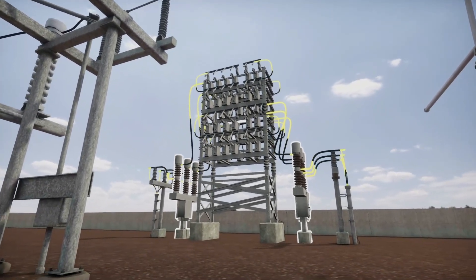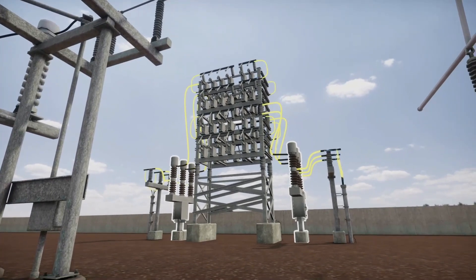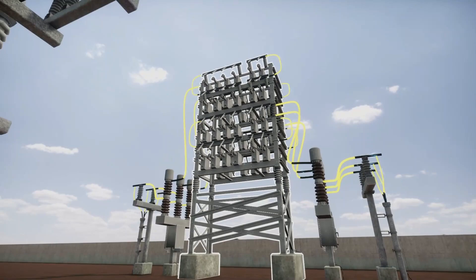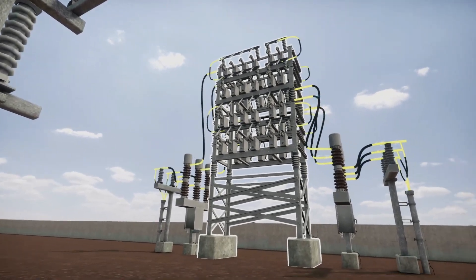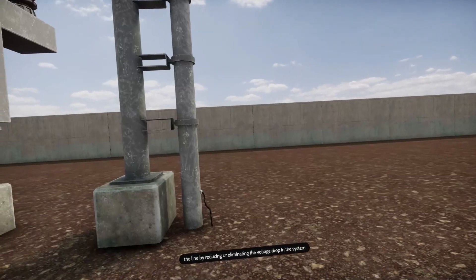Cap switches can be manually used to isolate capacitor banks from bus. Capacitors are used to control the level of the voltage supplied to the line by reducing or eliminating the voltage drop in the system caused by inductive reactive loads.